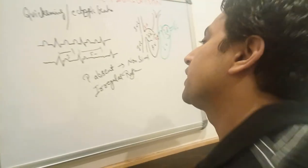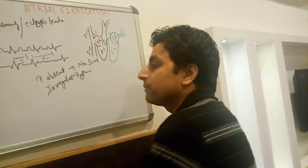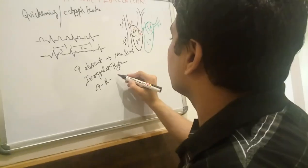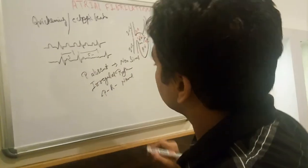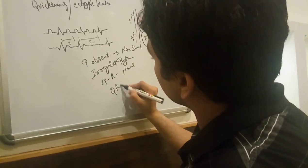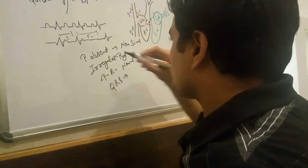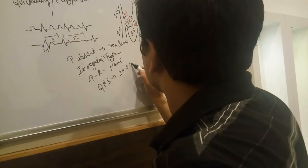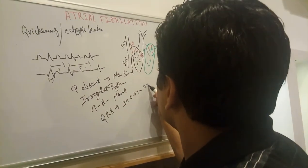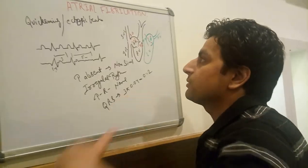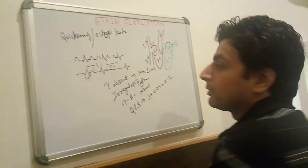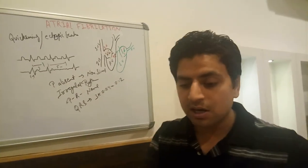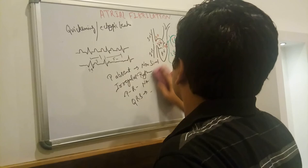We have irregular rhythm in atrial fibrillation. We also measure the PR interval, but since there is no P wave, there is no PR interval. For the QRS complex: three small boxes times 0.04 equals 0.12 seconds, so the QRS complex must be normal in atrial fibrillation.